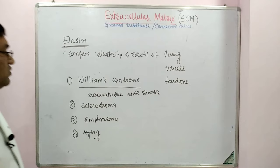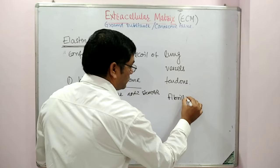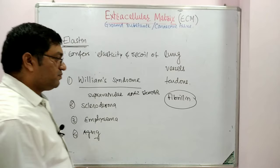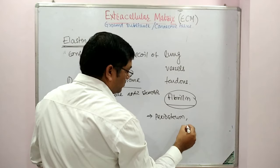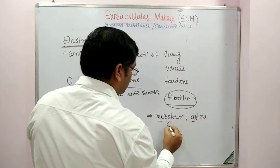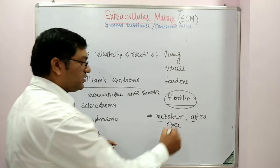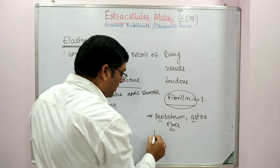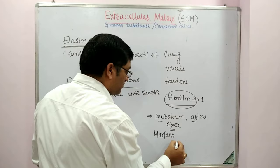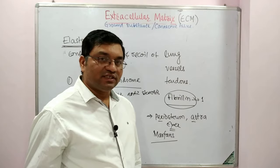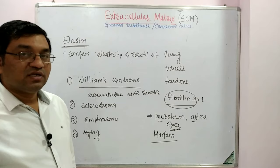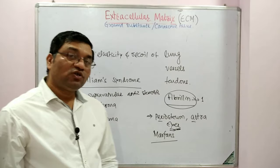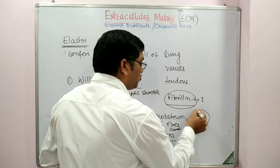Next is fibrillin. It is present in periosteum and aorta. A defective gene for fibrillin-1 leads to Marfan syndrome. Marfan syndrome is characterized by tall stature, long digits, ectopia lentis — which results in subluxation of the lens — and serious malformation because of dilatation of the aorta.